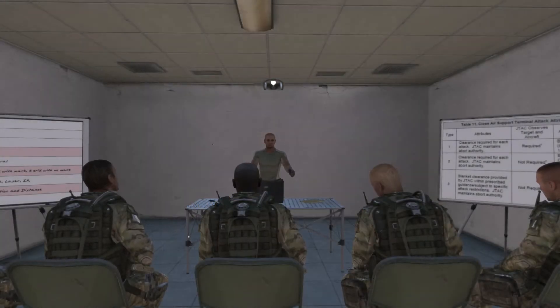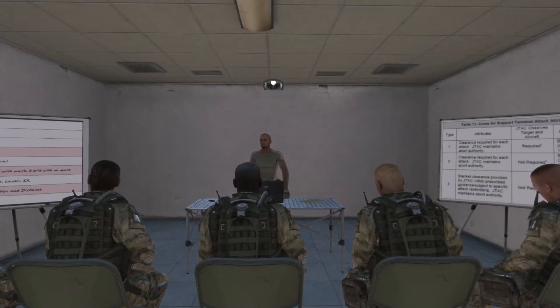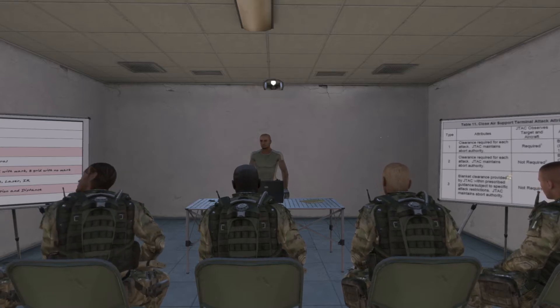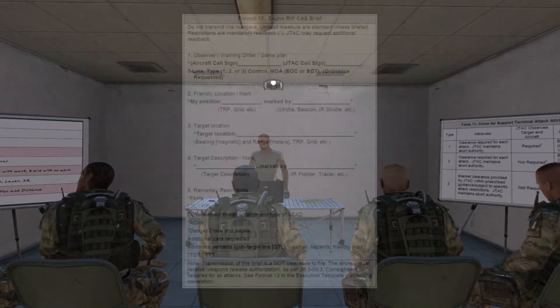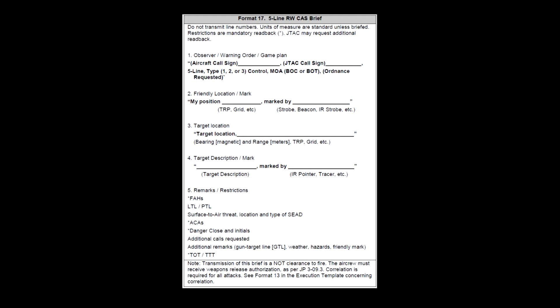Now we will cover the 5-line brief. Due to the lower altitude, speed, and increased maneuverability of rotary wing aircraft, their brief is shorter and more compact. Line 1 is for informing the pilot of the type of control to be used, the method of attack — referred to as MOA — and the ordnance requested.